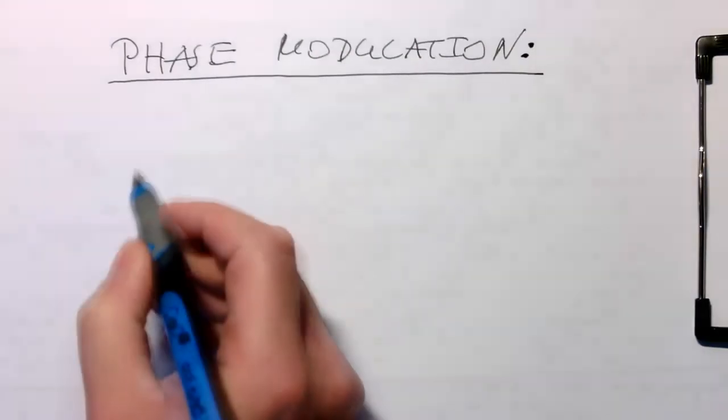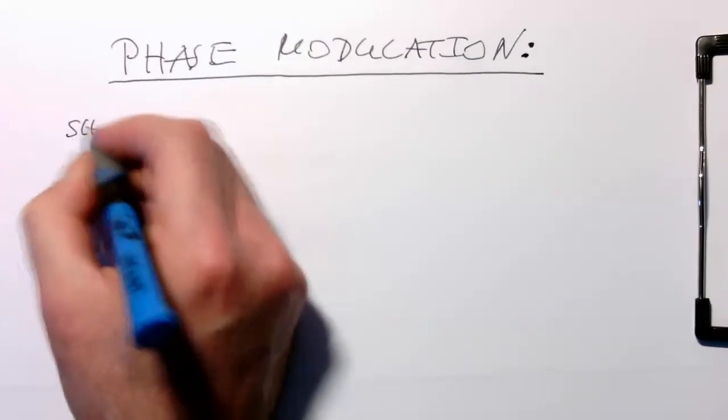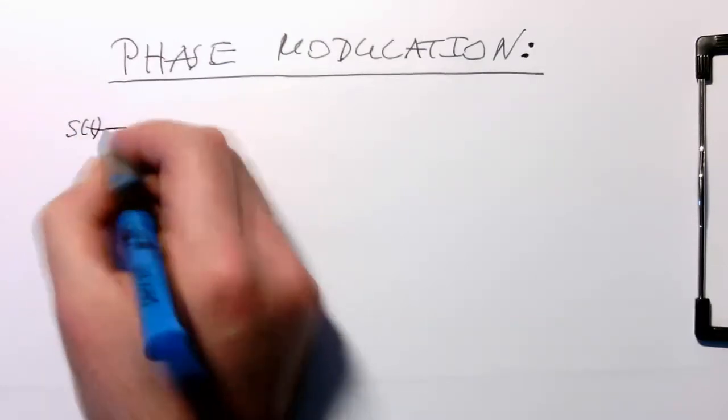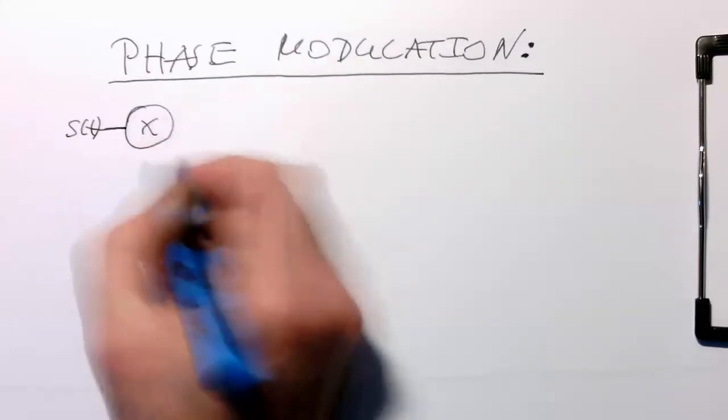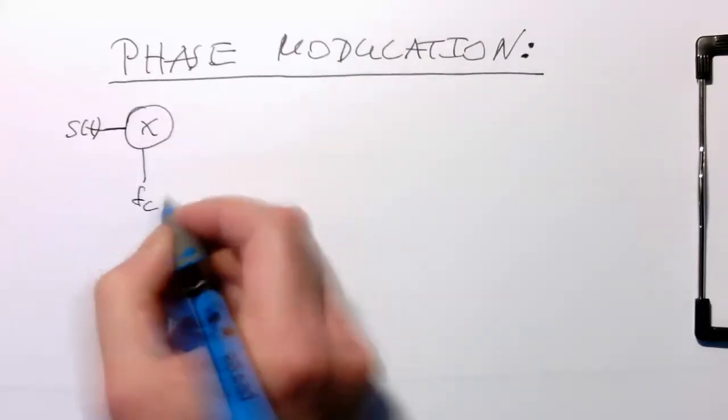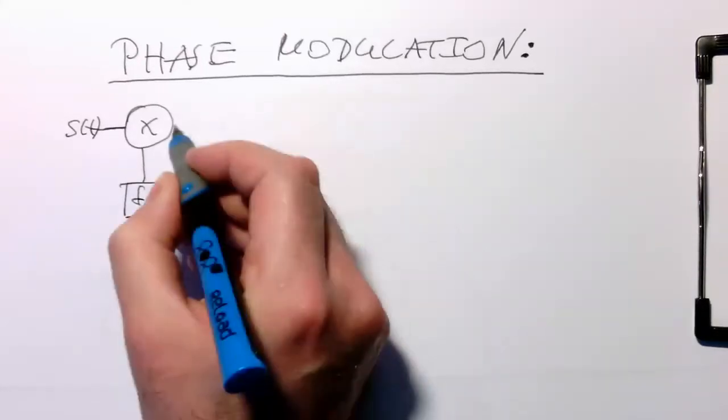Phase modulation is a very simple and straightforward way of modulation, especially in digital domain. We've got our symbols, we multiply that with the carrier, and that's it.